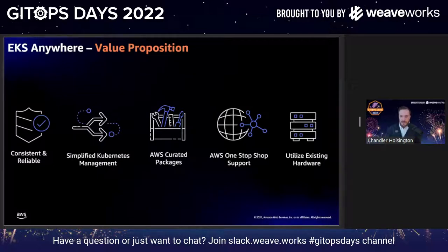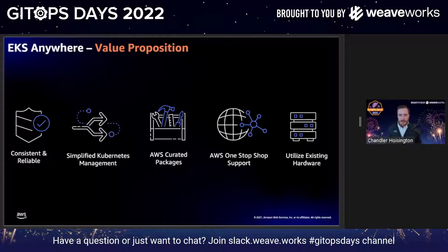Diving into EKS Anywhere a bit more — the reason we built it comes down to a few key things. The first is we really wanted to give customers a one-stop shop experience for support. If you've ever stood up a production Kubernetes platform without using a managed service from a cloud provider, it can be a lot of work, and you have to decide which vendors to procure support from. We wanted to help solve that by saying: if you run EKS Anywhere, any component we ship with it — whether built by Amazon or open source — we're going to support that for you.